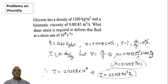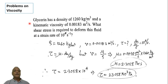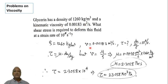Hello everyone, in this session we are going to solve some problems on viscosity. We'll read the problem and note down the data. Glycerin has a density of 1260 kg per meter cube, written as rho equal to 1260 kg per meter cube, and a kinematic viscosity of 0.00183 meter square per second, represented by nu.